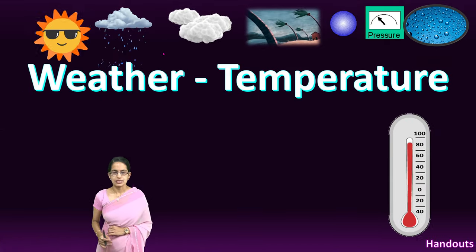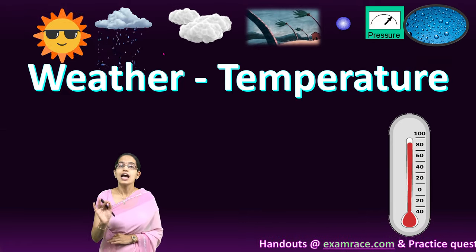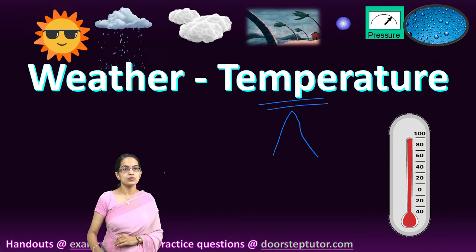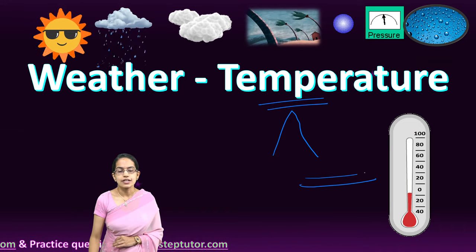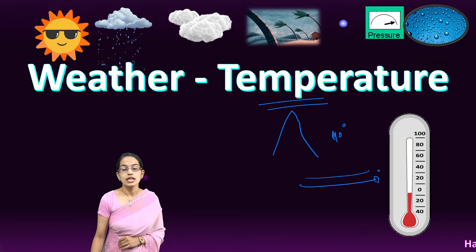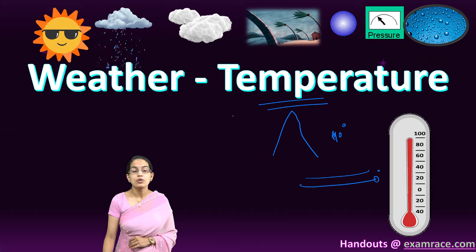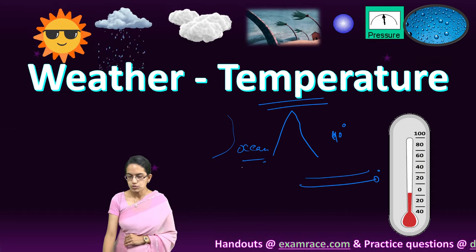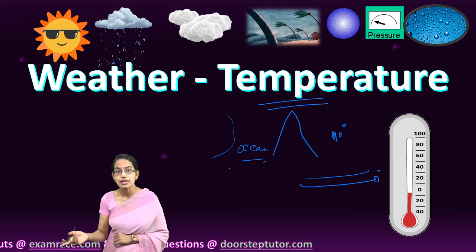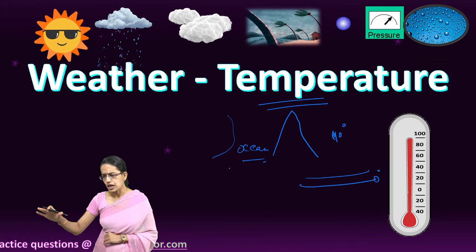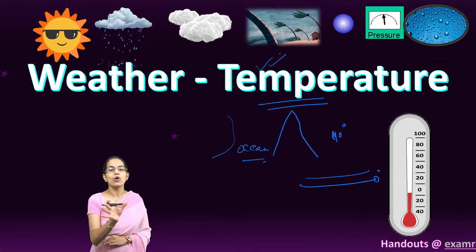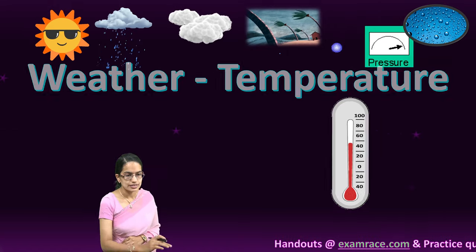Temperature is the degree of hotness or coldness, and it depends on numerous parameters: altitude, latitude (whether zero degrees at the equator or 90 degrees toward the pole), proximity to the ocean, soil condition, wind condition, time of day, and the kind of landform or terrain. Temperature would vary based on all these features. We have covered this in detail in a separate lecture.